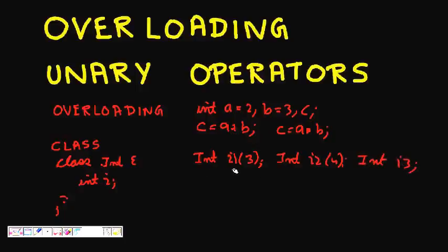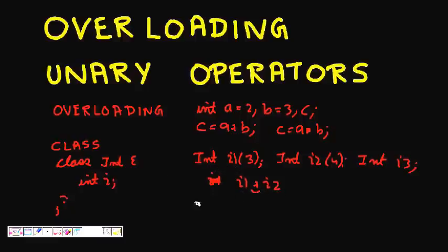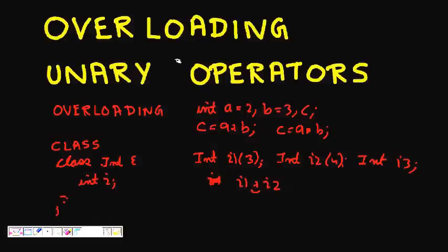We want that this class objects also have the property that operators should work in the same way as they work for integer numbers. So I want that i1 plus i2 should also work for a class object of the integer type. This is done by operator overloading.